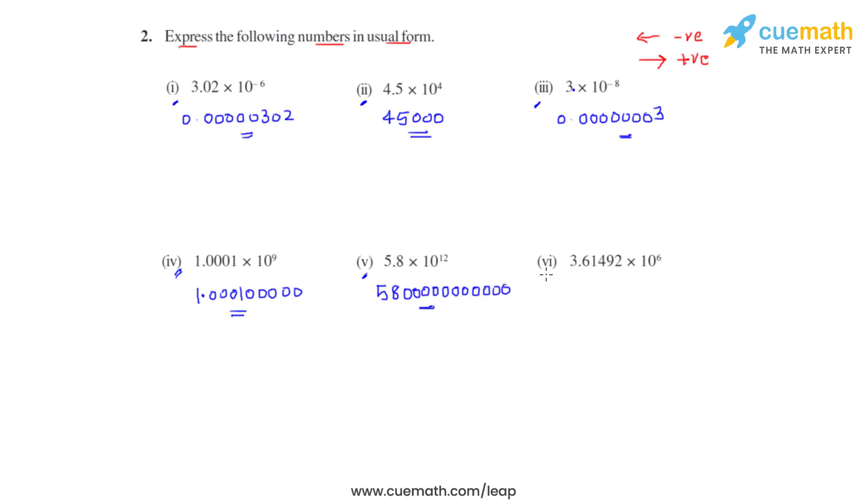Now coming to the sixth bit, the power is positive, so we'll move the decimal which is between 3 and 6 towards right by 6 places. The answer for this one will be 36,149,200. This is how we convert a standard form number into a usual form.